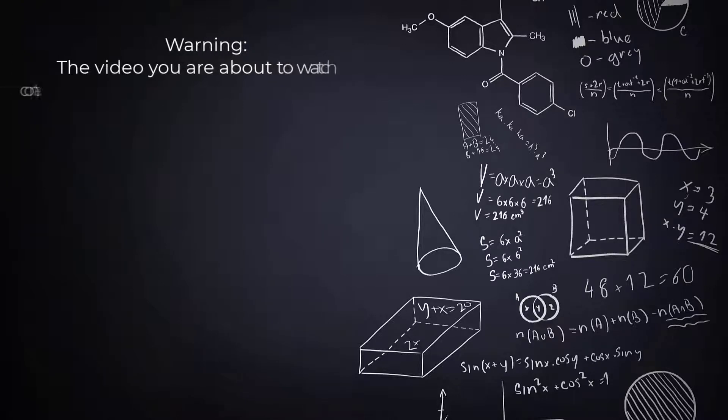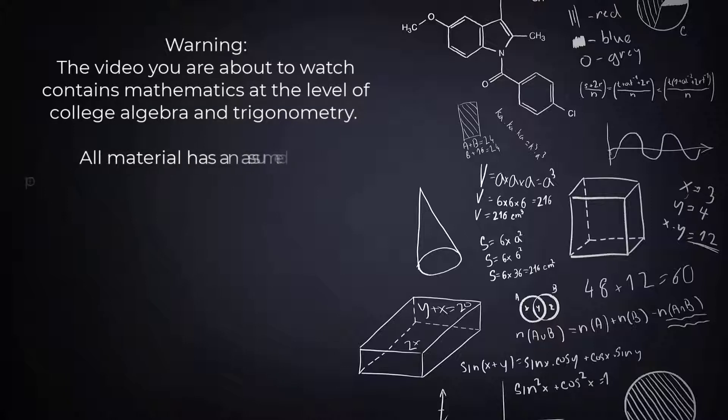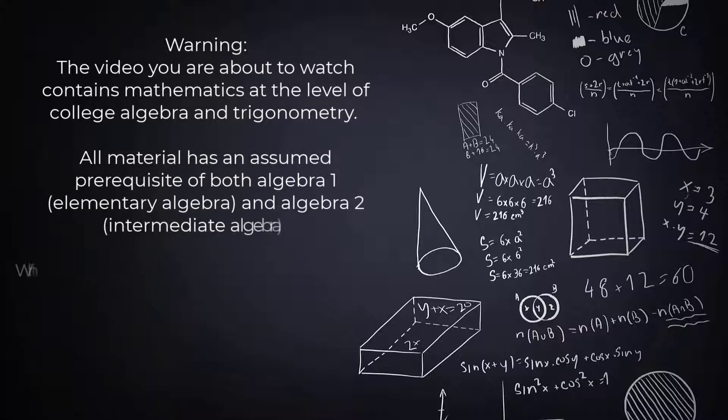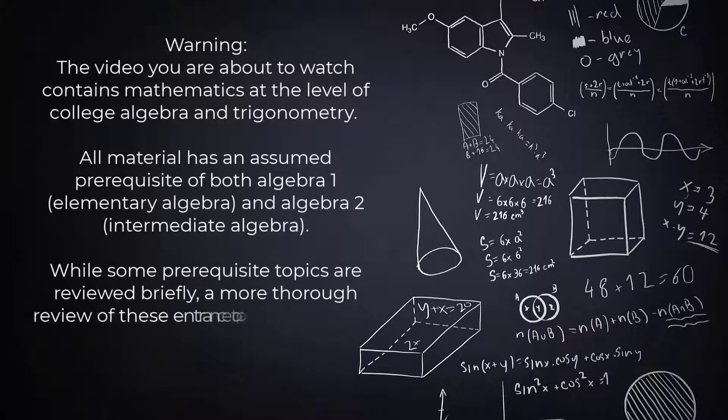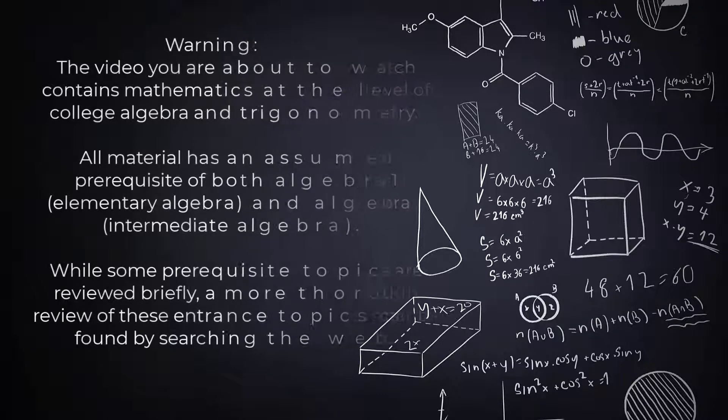Warning! The video you're about to watch contains mathematics at the level of college algebra and trigonometry. All material has an assumed prerequisite of both Algebra 1, which is Elementary Algebra, and Algebra 2, which is Intermediate Algebra. While some prerequisite topics are reviewed briefly, a more thorough review of these entrance topics can be found by searching the web.